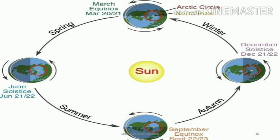Let us take the Summer Solstice first, which is on the left-hand side of the sun. On 21st June, the Northern Hemisphere experiences the longest day and the shortest night, because the position of the Earth on 21st June is known as the Summer Solstice — the North Pole is inclined towards the sun, and the sun rays fall vertically on the Tropic of Cancer. Therefore, places in the Northern Hemisphere experience the summer season.